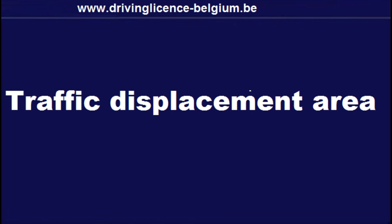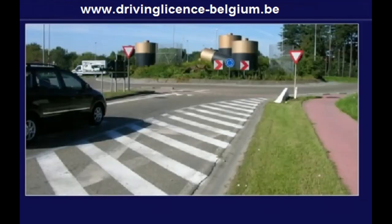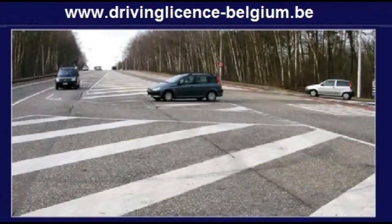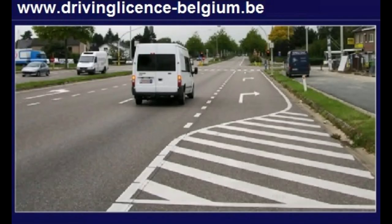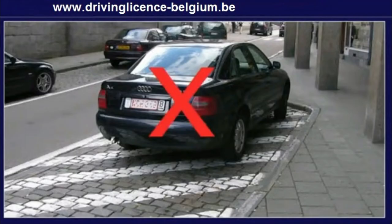Traffic Displacement Area. Sometimes there are solid slanting white lines painted next to or on parts of the lane. We call it a traffic displacement area or traffic displacement surface. You are not allowed on it — to drive, to wait, or to park.